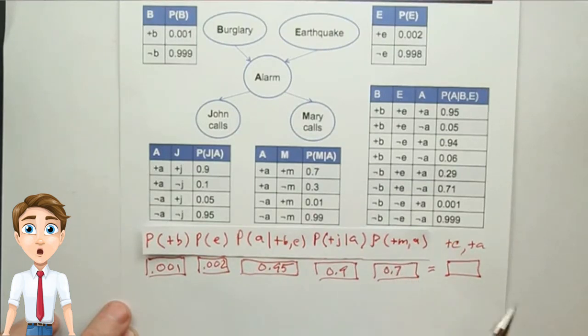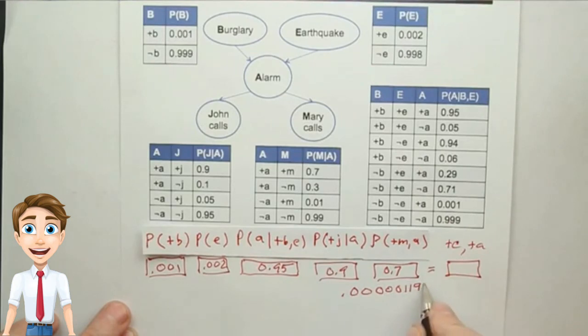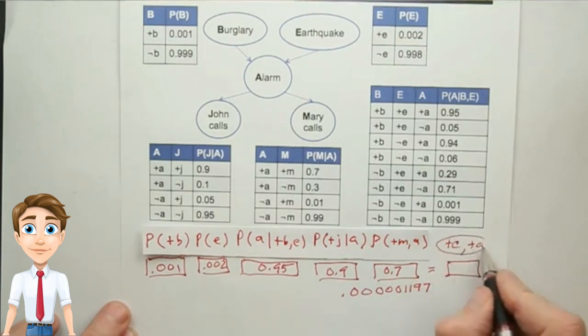We multiply all those together. It's going to be a small number because we've got the 001 and the 002 here. Can't quite fit it in the box, but it works out to 0.000001234501197. That seems like a really small number, but remember, we have to normalize by the P of plus J plus M term, and this is only one of the four possibilities.